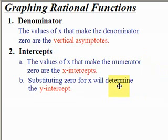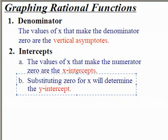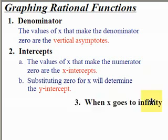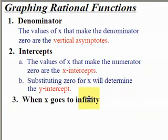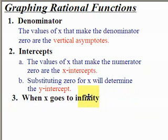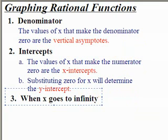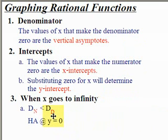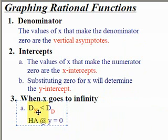What differentiates rational functions from the polynomial functions we studied is what happens when x gets big — when x goes to infinity. In this step, there are basically three different cases to consider. The first case is to look at the degree of the numerator in relation to the degree of the denominator.